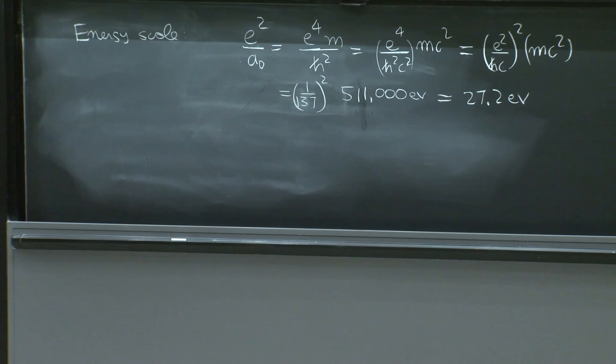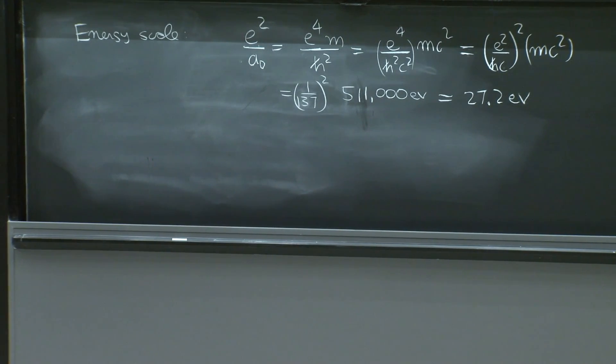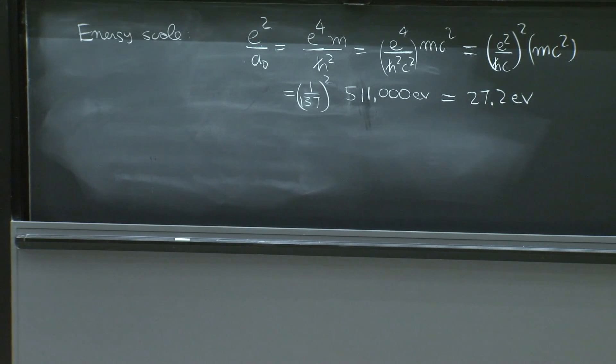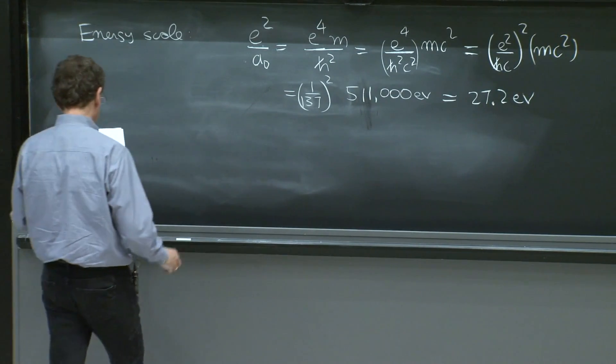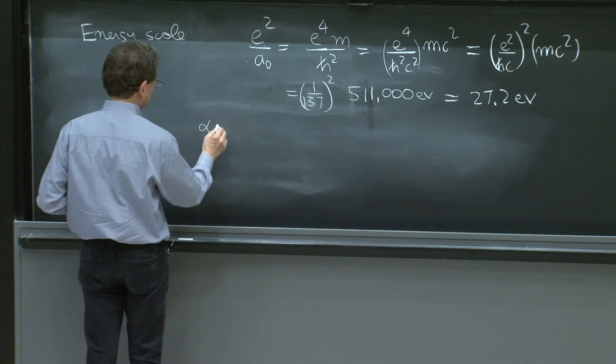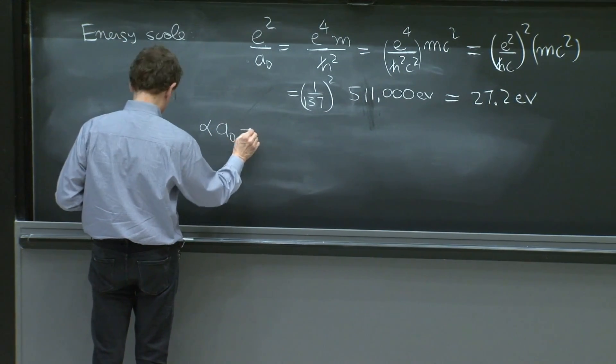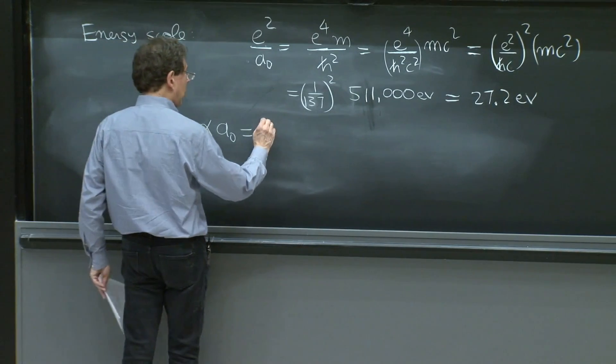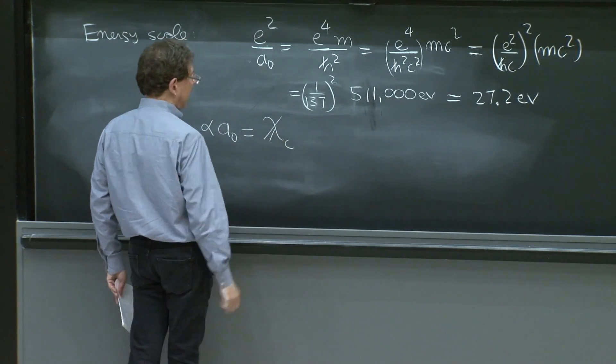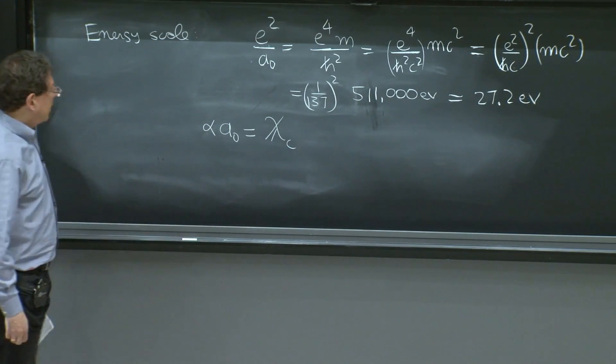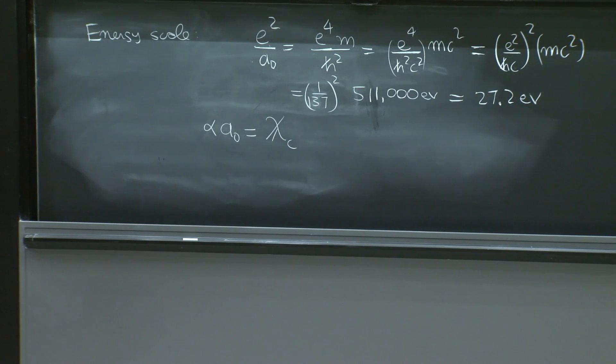I may remind you of things you did a long time ago in this course. You calculated a couple of other constants. And you showed that alpha, the fine structure constant times a0, was the so-called Compton wavelength of the electron with a bar. So it's h bar over mc.